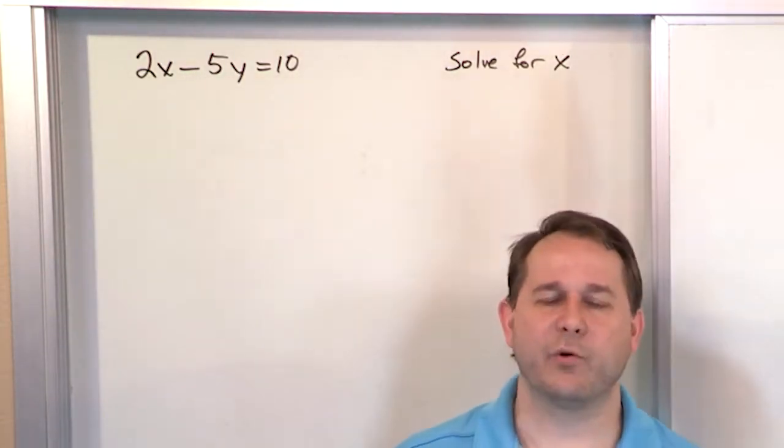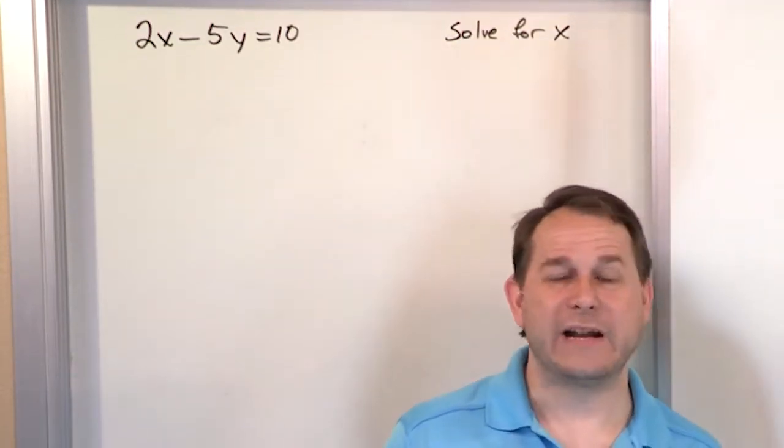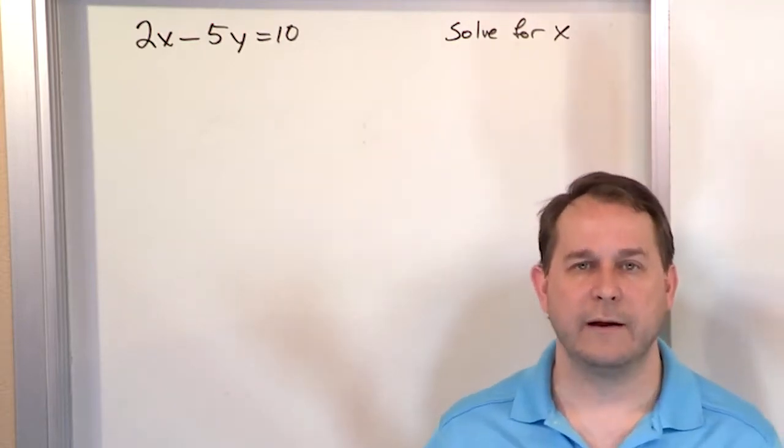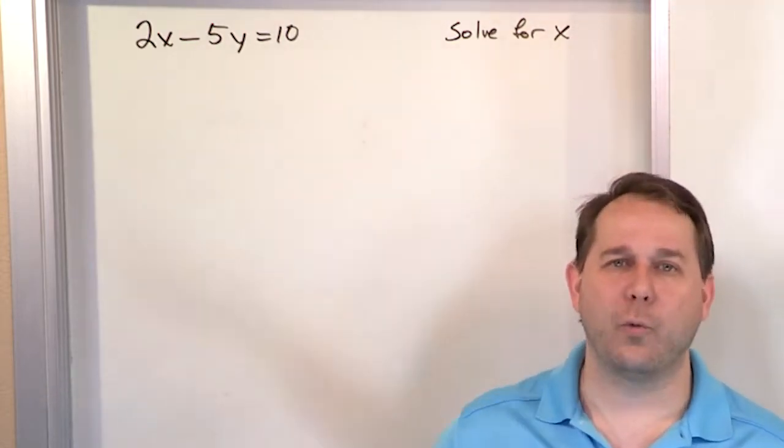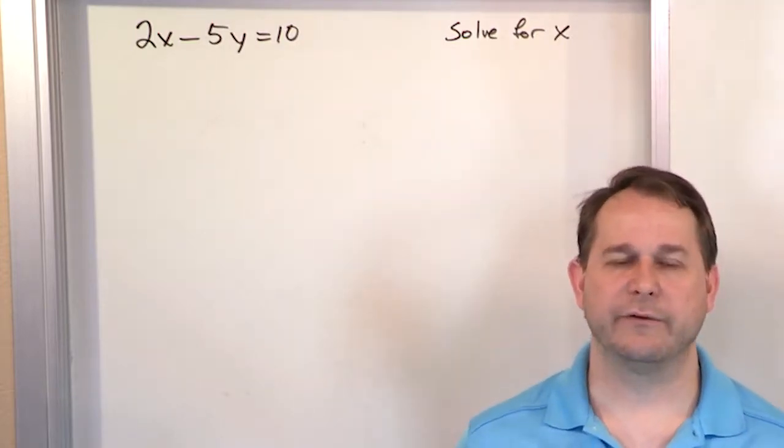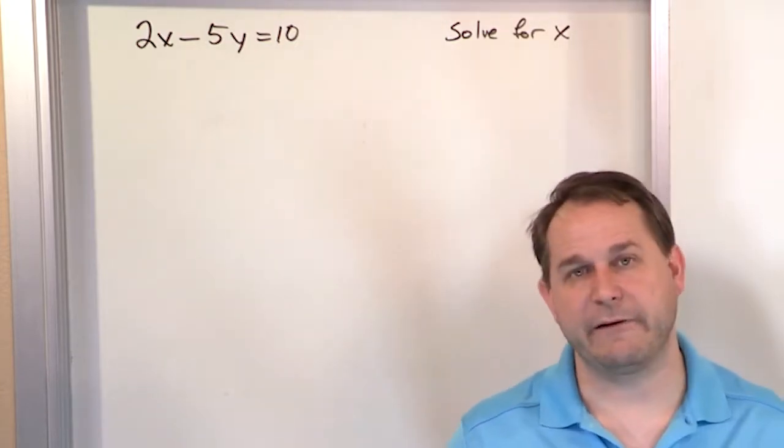Well, an equation can have more than one variable. You can have x, you can have y, you can have t, you can have all kinds of variables. Just think about the equation for the area of a circle: A equals pi r squared. You have A, you have r, and then you have pi. There's lots of equations with multiple variables. So this is just another equation that has different variables.